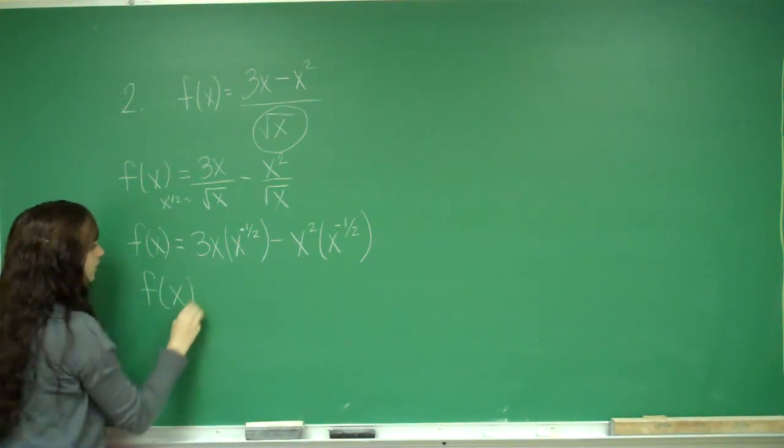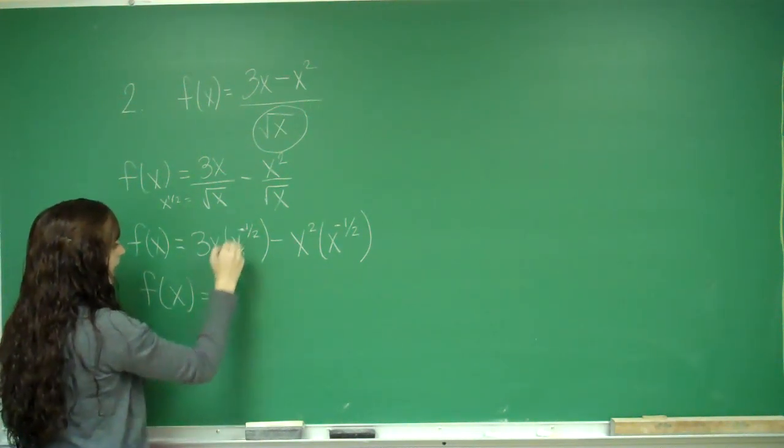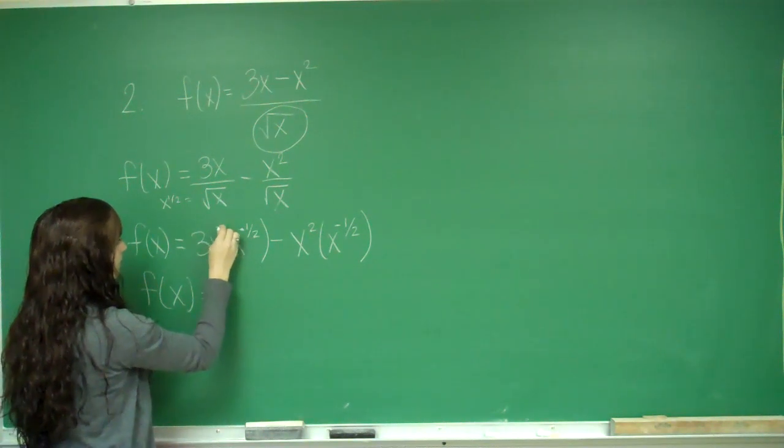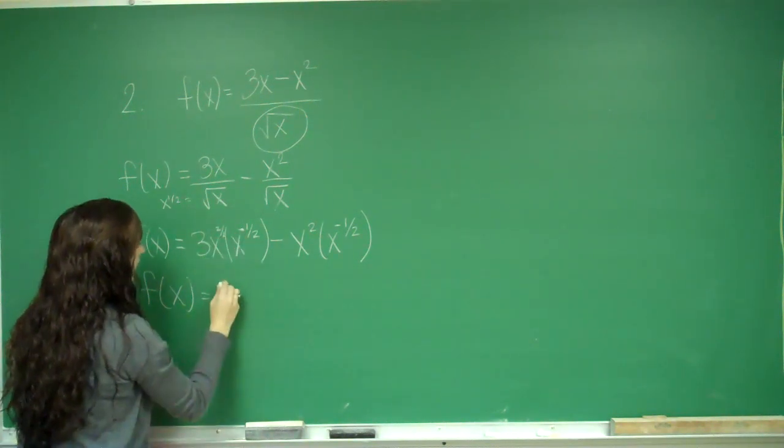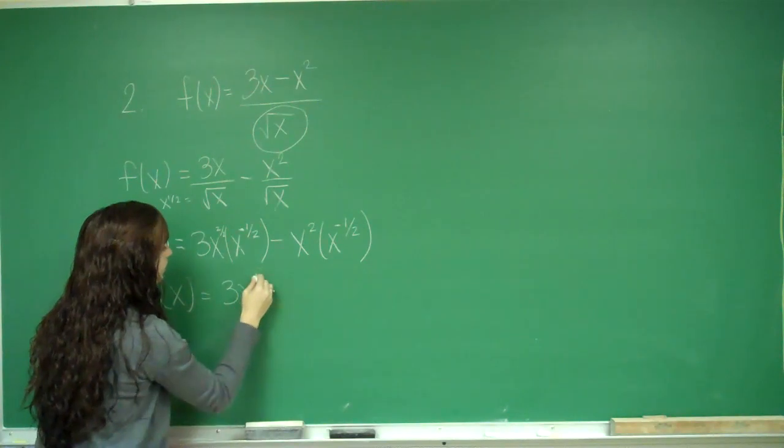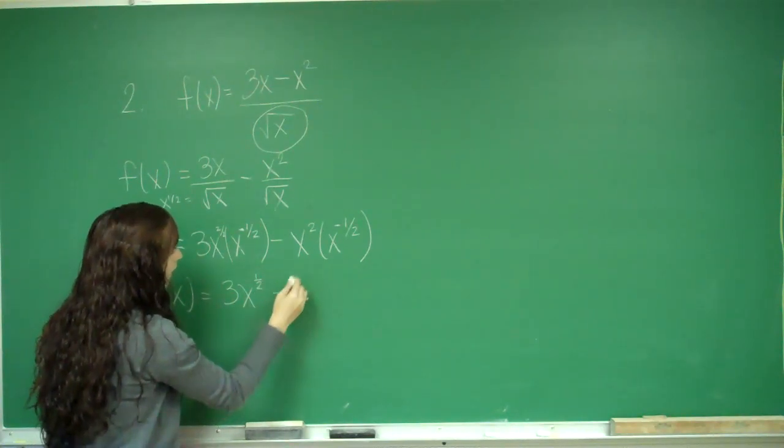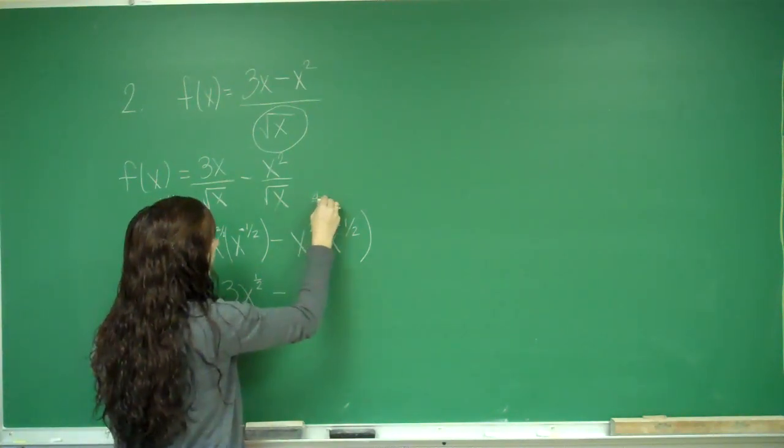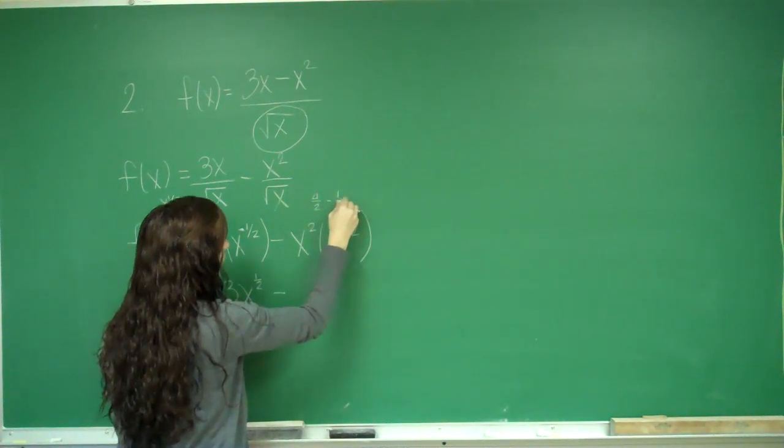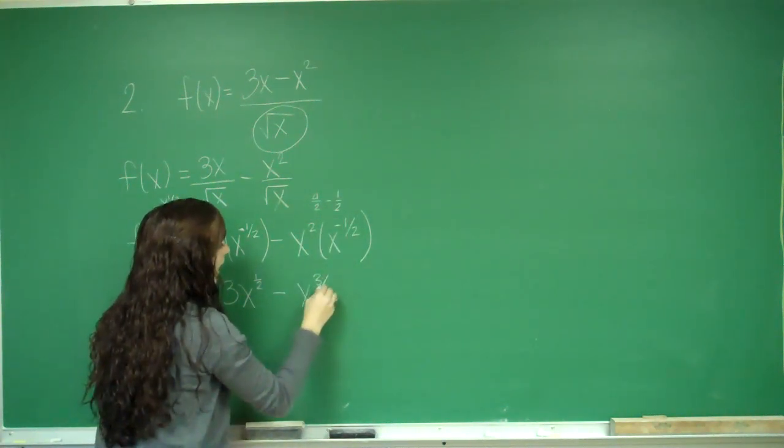Now I'm going to combine. And when I multiply, I add. So this is to the power of 2 over 2. 2 over 2 minus one half. I have x to the one half. And then this would be 4 over 2 minus one half. So I have x to the three halves.